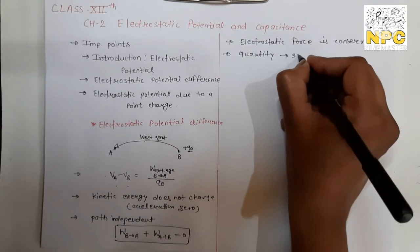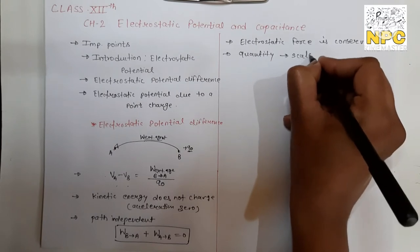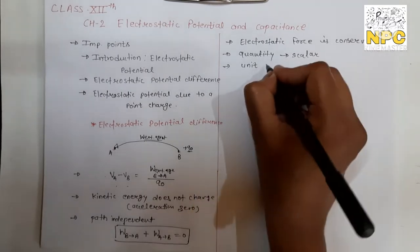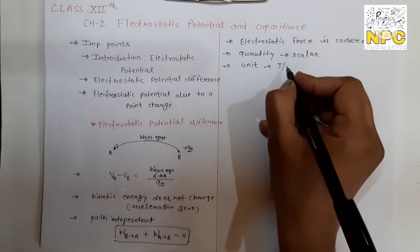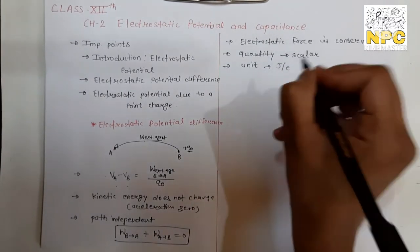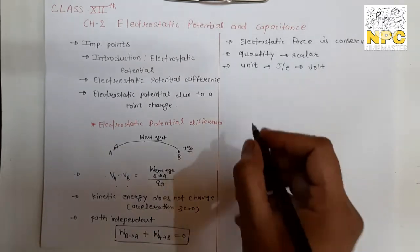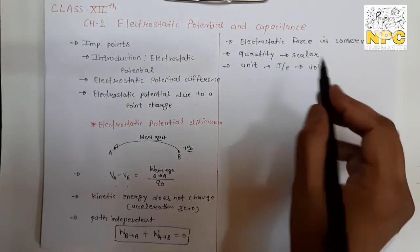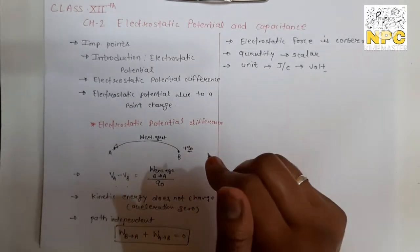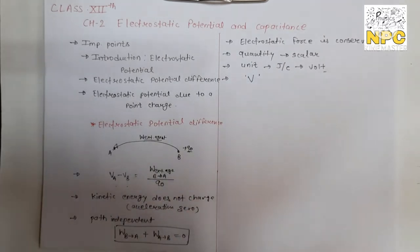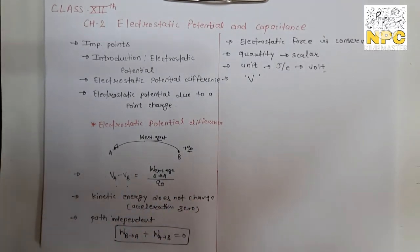Electrostatic potential is a scalar quantity. Its unit is work divided by charge — joules per coulomb — and this is called volt. Potential difference is also called voltage. It is denoted by capital V. These are the basic things about electrostatic potential difference between two points.